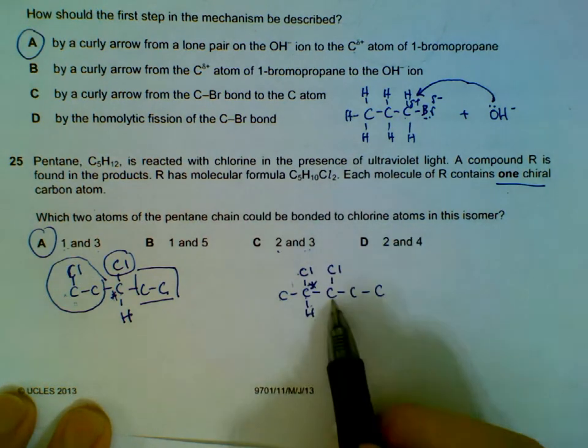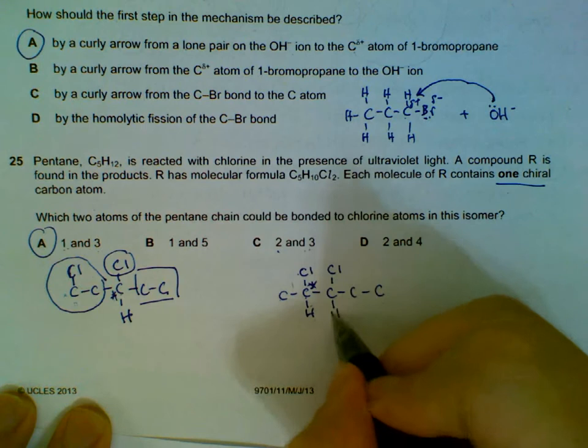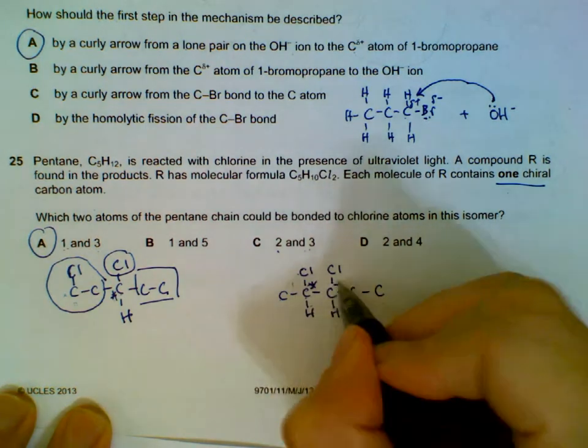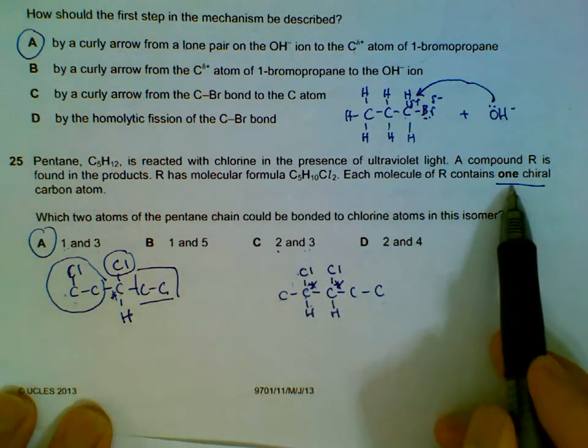Look at this carbon, we actually have one, two, three, and four. So actually this is also chiral. But the question actually wants us to figure out the molecule that has only one chiral carbon, so this option is also out.